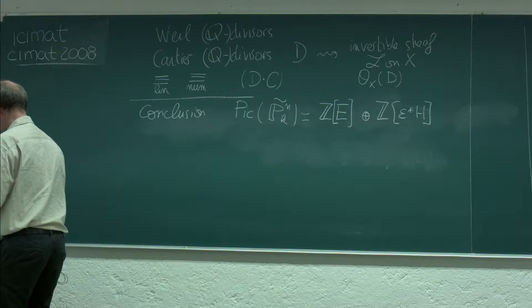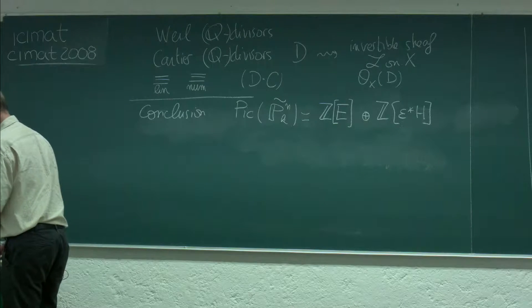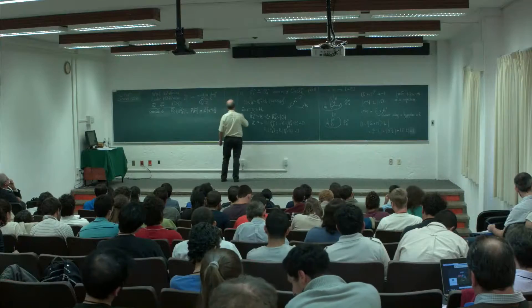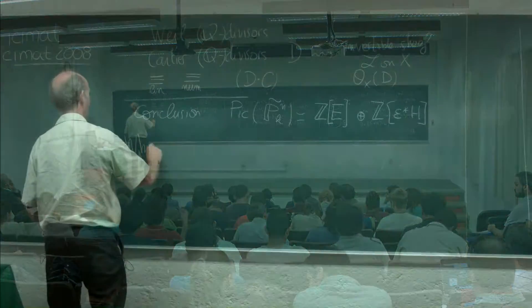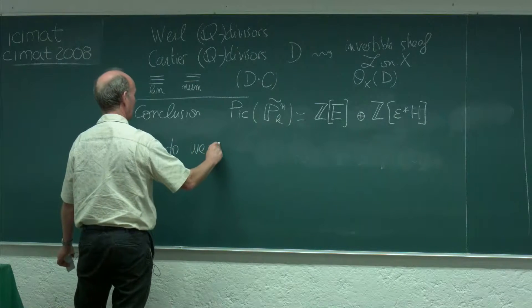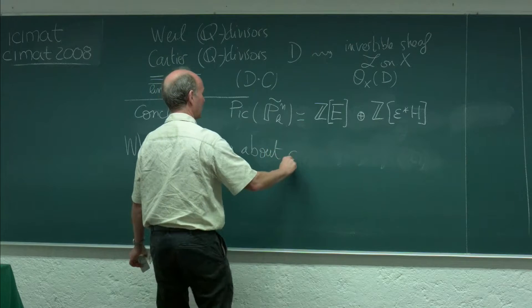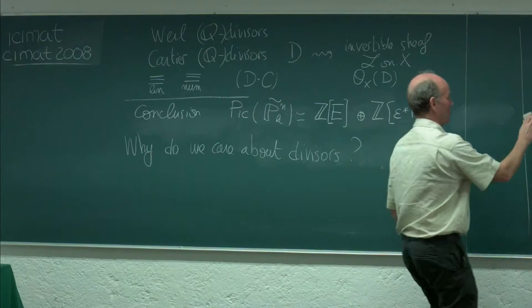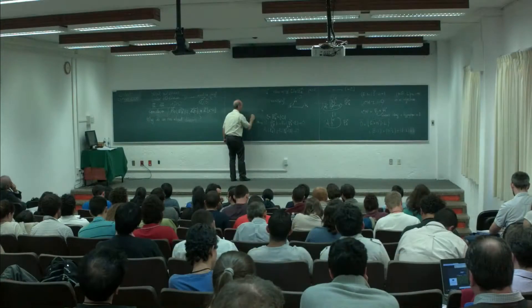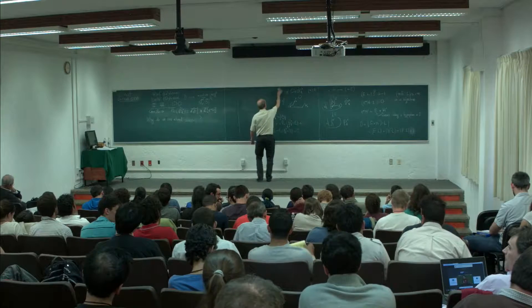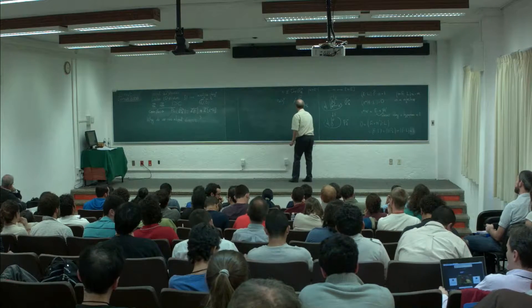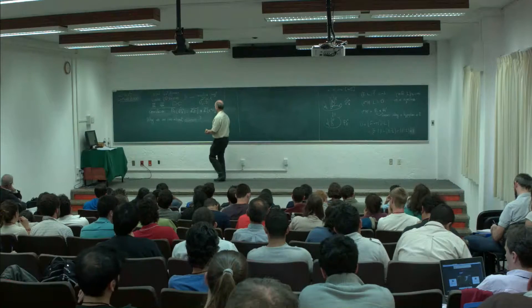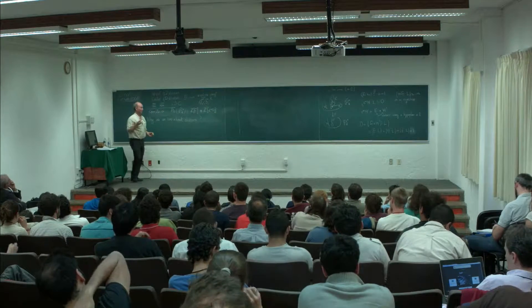We'll go back to this example later. Why are we interested in these divisors? The main reason is the intimate relationship between divisors (or invertible sheaves) on X and morphisms to projective space. This has appeared already many times in other talks.